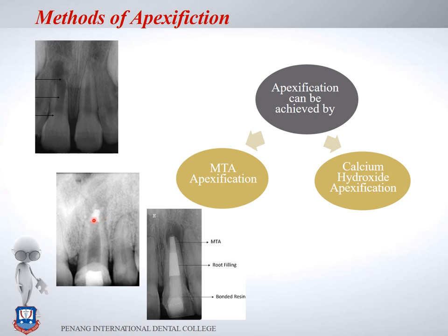The MTA sets and hardens to create a barrier, against which gutta-percha can be placed to obturate the canal. A typical MTA apexification results in an MTA plug, followed by root filling with gutta-percha, then post-endodontic GIC or composite, and a bonded resin restoration.